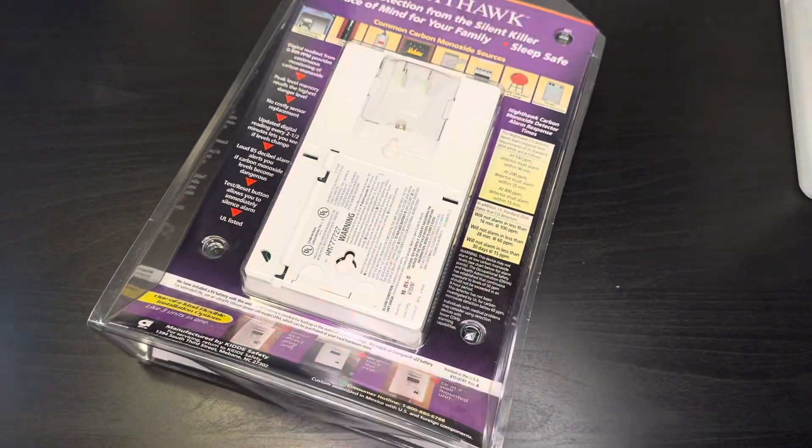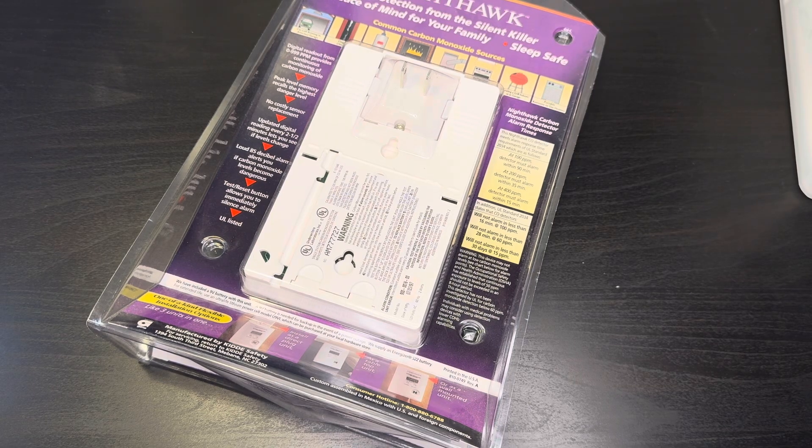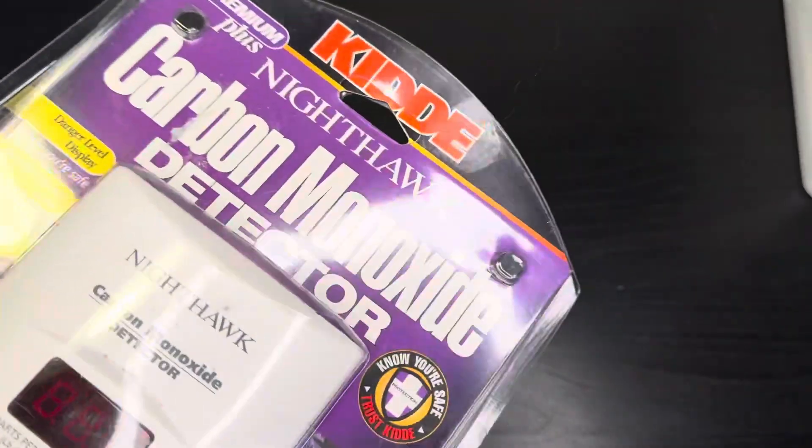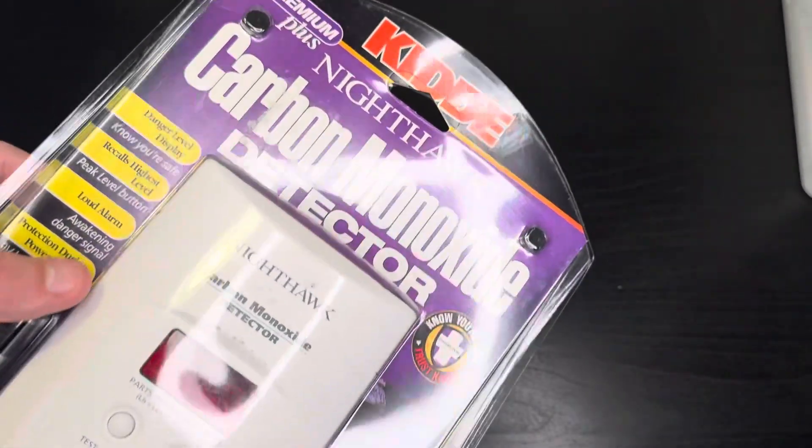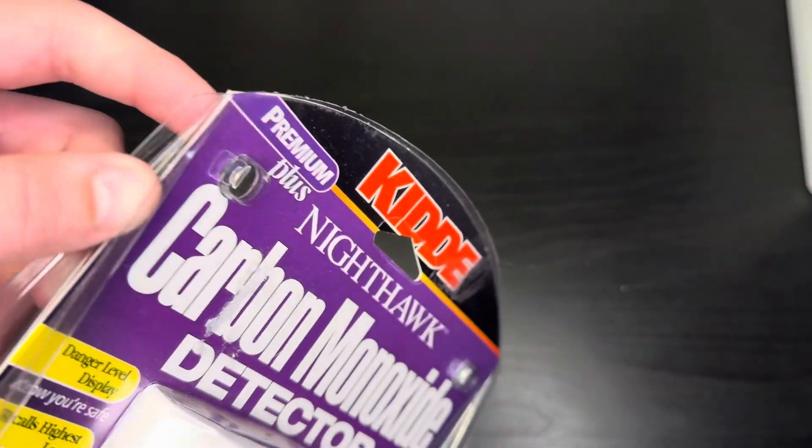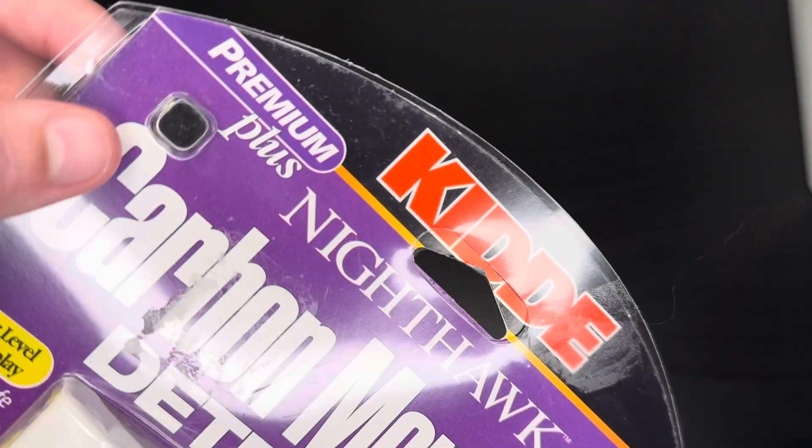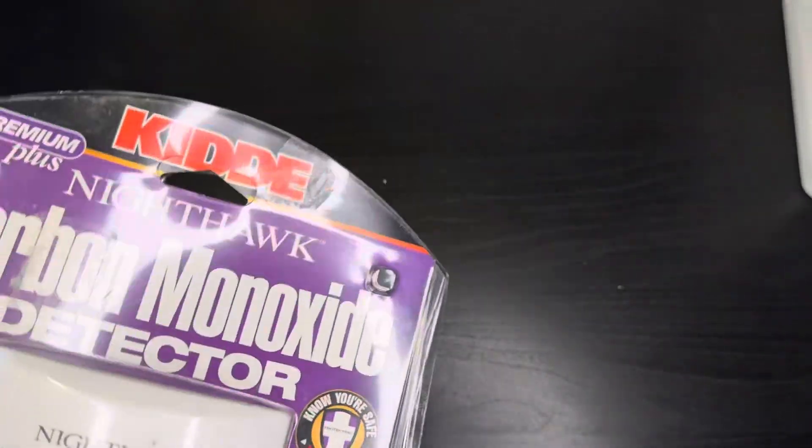So, this is guaranteed to do continuous, and it even came with the original box. Kidde Nighthawk Carbon Monoxide. Clamshell packaging, annoying a little bit. No, these ones are actually easy to get open. Oh, I didn't know that. That's cool. Yeah, Premium Plus. This was listed as Premium Plus back then because of the digital display.